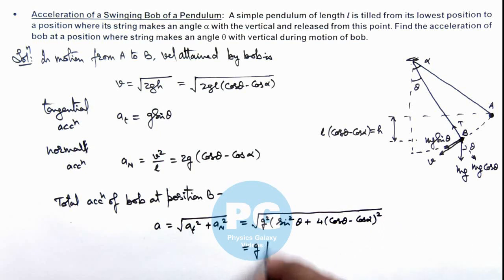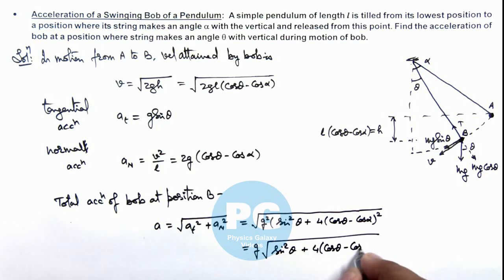So the result will be g√[sin²theta + 4(cos theta - cos alpha)²]. That will be the result of this problem.